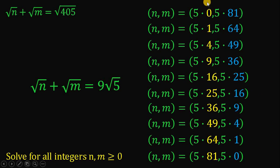And then, let's simplify. On the first line, we have 5 times 0 which is 0 and 5 times 81 is 405. So, we have the first pair of n comma m must be equal to 0 comma 405. This is valid because n comma m is definitely greater than or equal to 0.